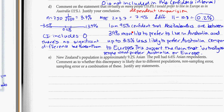Question E. New Zealand's population is approximately 9.2% Asian. The poll has 6.6% Asian respondents. Comment as to whether the discrepancy is likely due to different populations, non-sampling error, sampling error, or a combination of these, and justify any statements that you make.